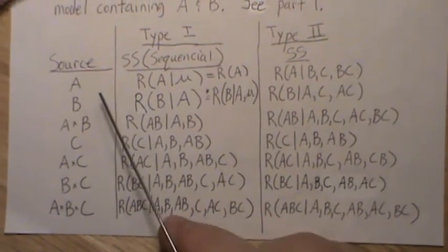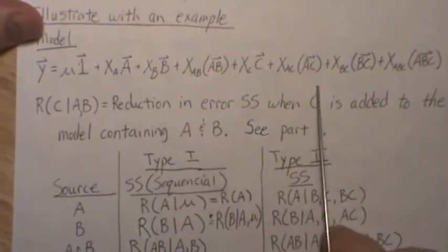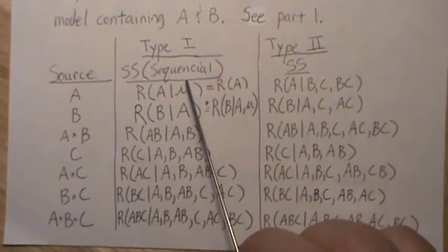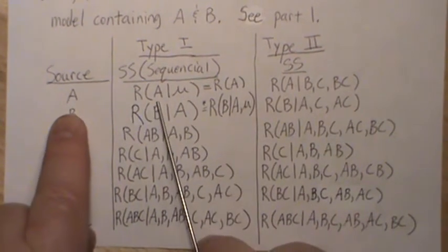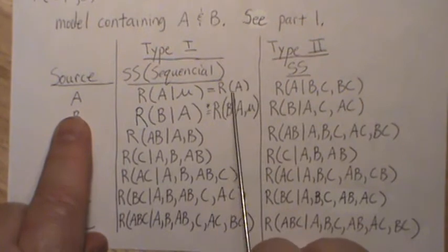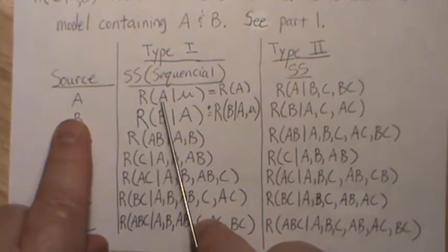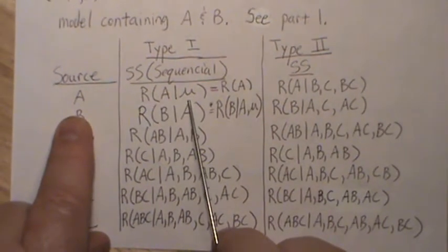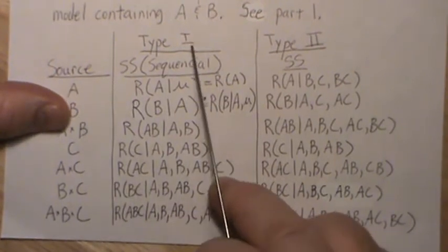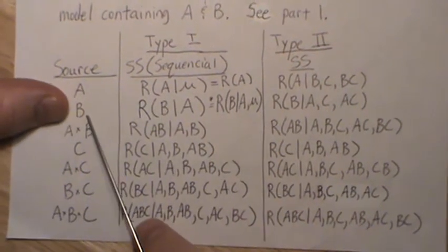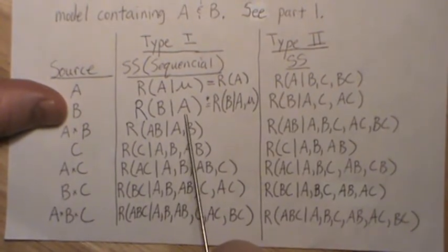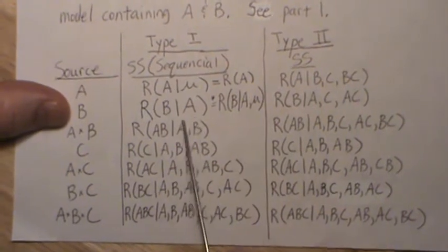In our model, we have these sources listed in the same order. In type 1 sums of squares — often called the sequential sum of squares — we look at R(A), the reduction in the sum of squares when A is added to the model with only the constant parameter. Then we go to the next term: R(B | A), the reduction in the sum of squares when B is added to the model that already has A in it.